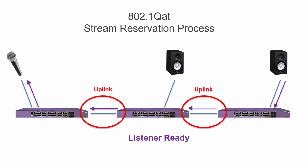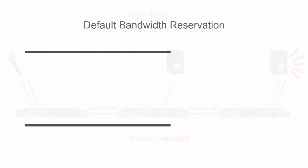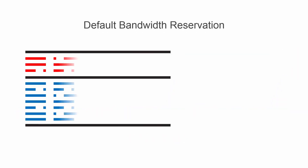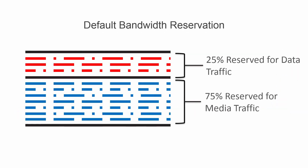Once a stream has been determined to be achievable on the network, the bandwidth required for the stream is reserved across the entire path. But this reservation only happens to a limit, which allows other network traffic to exist. This percentage is actually adjustable within the switch configuration.